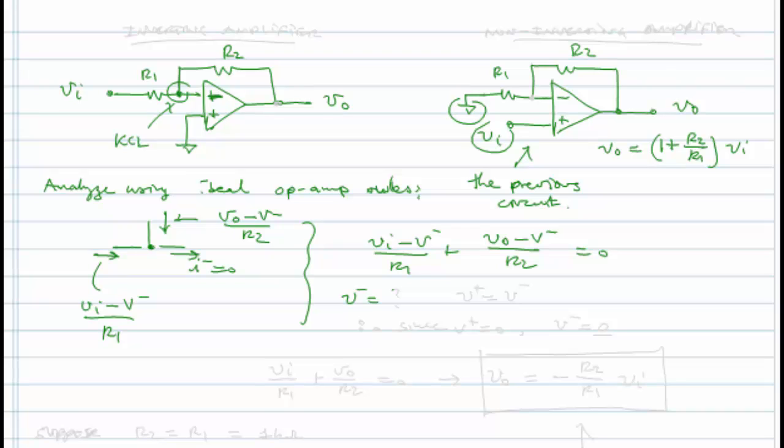Now what's V minus? This is where our op amp rule comes in really handy. The op amp rule number one is that V plus is equal to V minus. So therefore, since V plus is grounded, V minus must be equal to zero. So we then have VI over R1 plus VO over R2 is equal to zero, and I can easily solve for VO now, and it will be minus R2 over R1 times VI.